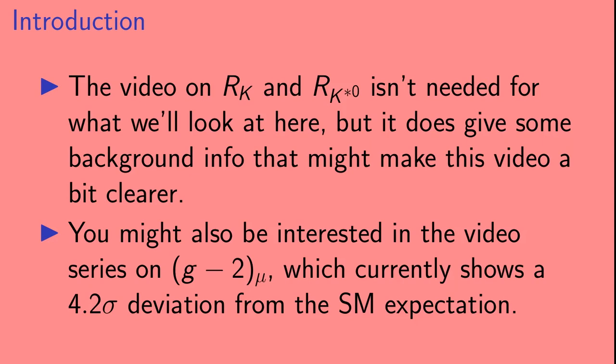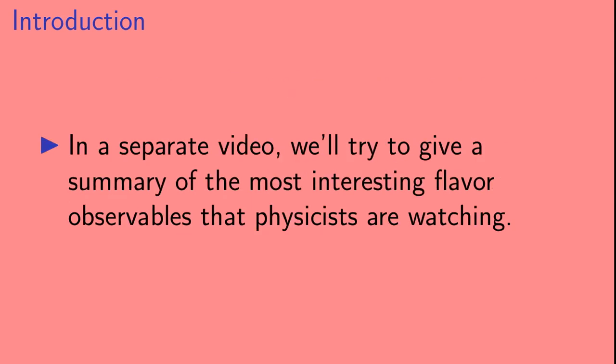The video on RK and RK star isn't needed for what we'll look at here, but it does give some background info that might make this video a bit clearer. You might also be interested in the video series on muon g-2, which currently shows a 4.2 sigma deviation from the standard model expectation. Also, in a separate video, we will try to give a summary of the most interesting flavor observables that physicists are currently taking a look at.